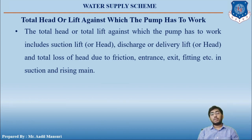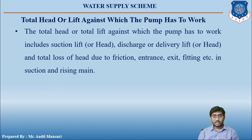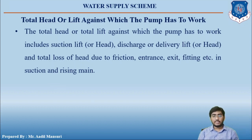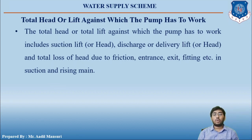The total head or lift against which the pump has to work includes: suction lift or head, discharge or delivery lift or head, and the total loss of head due to friction, entrance, exit, fittings, etc. in the suction and rising main. So you need to find out how much head is suction, how much is discharge, and also the losses that occur in the pipe during transmission.